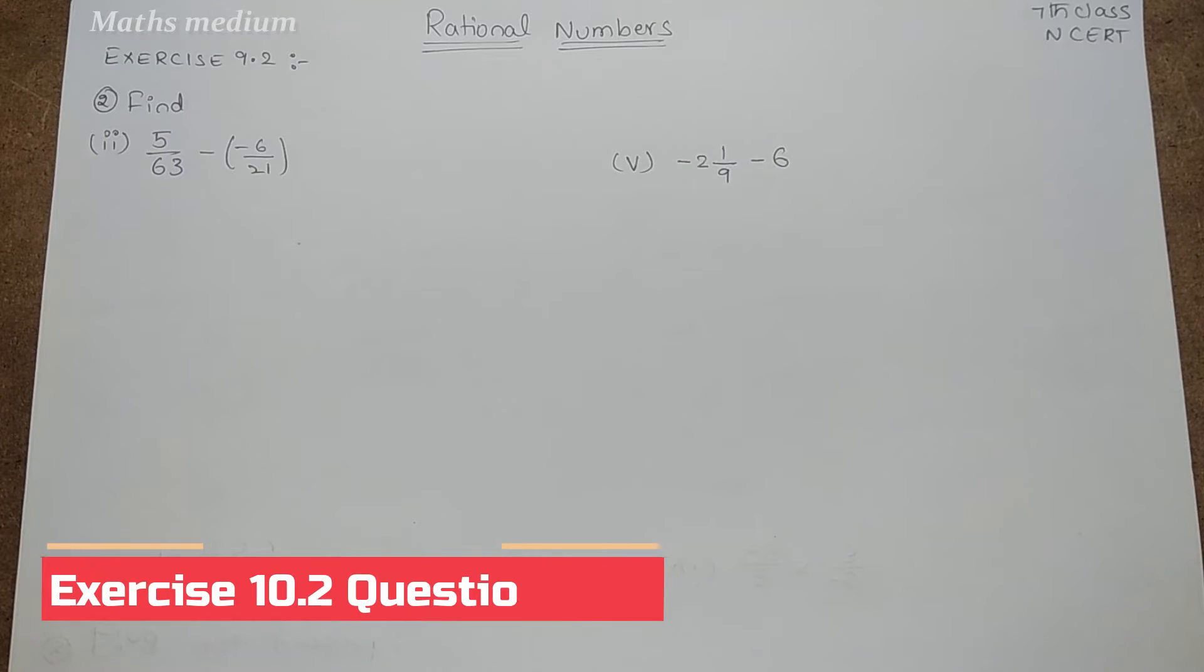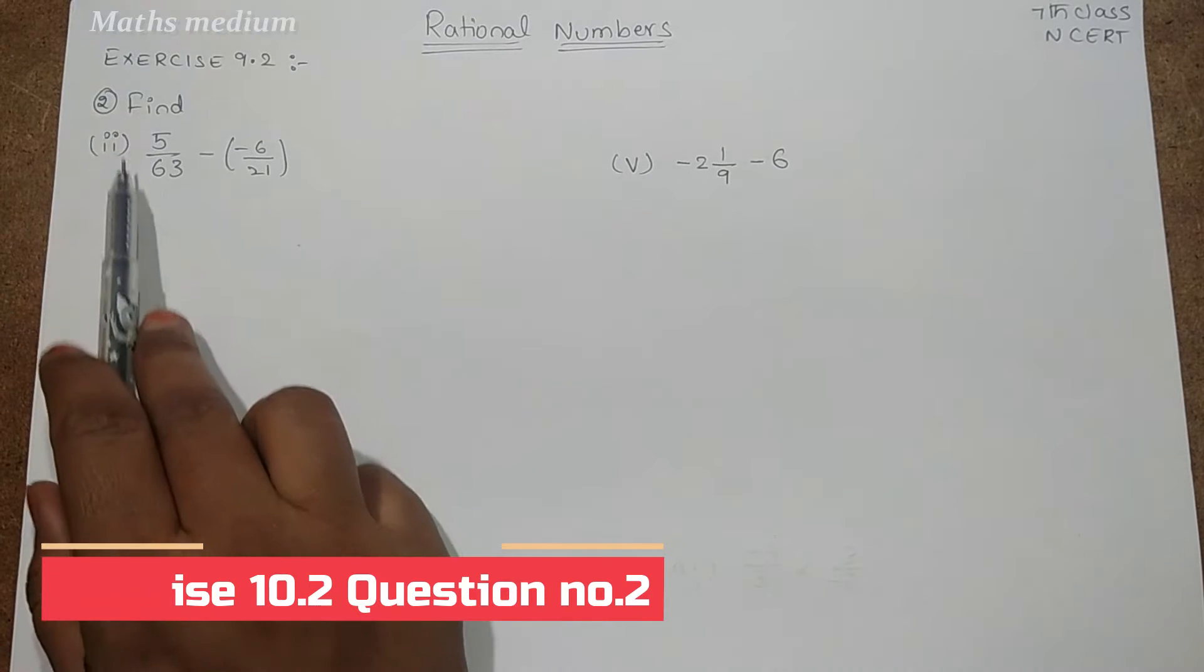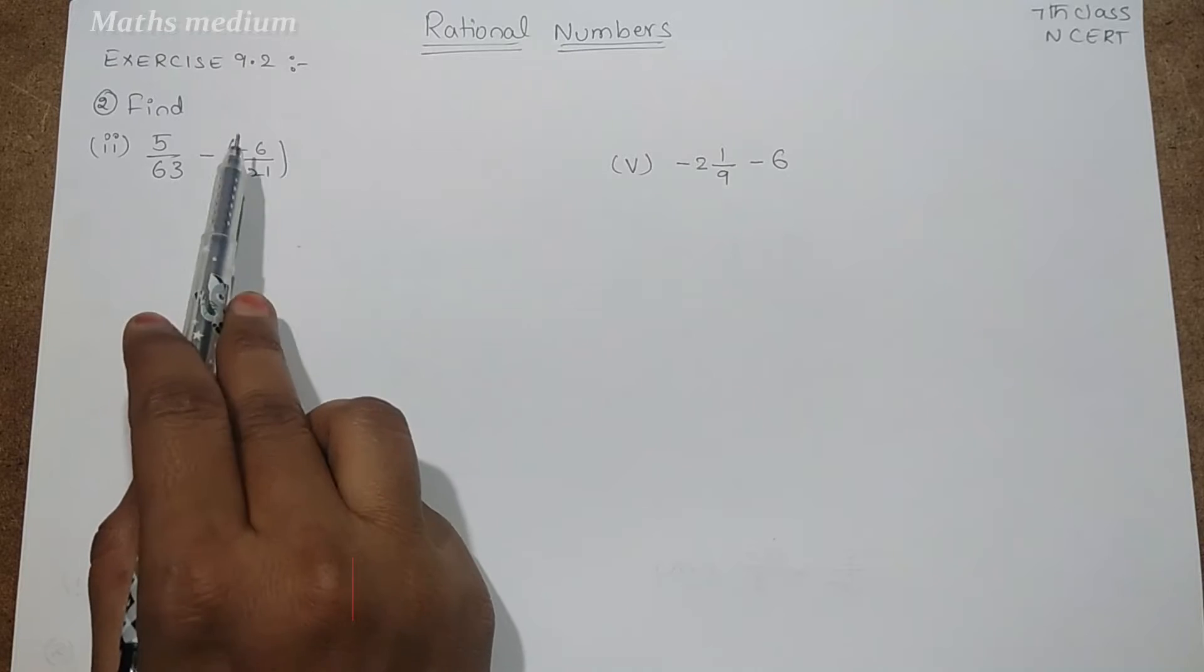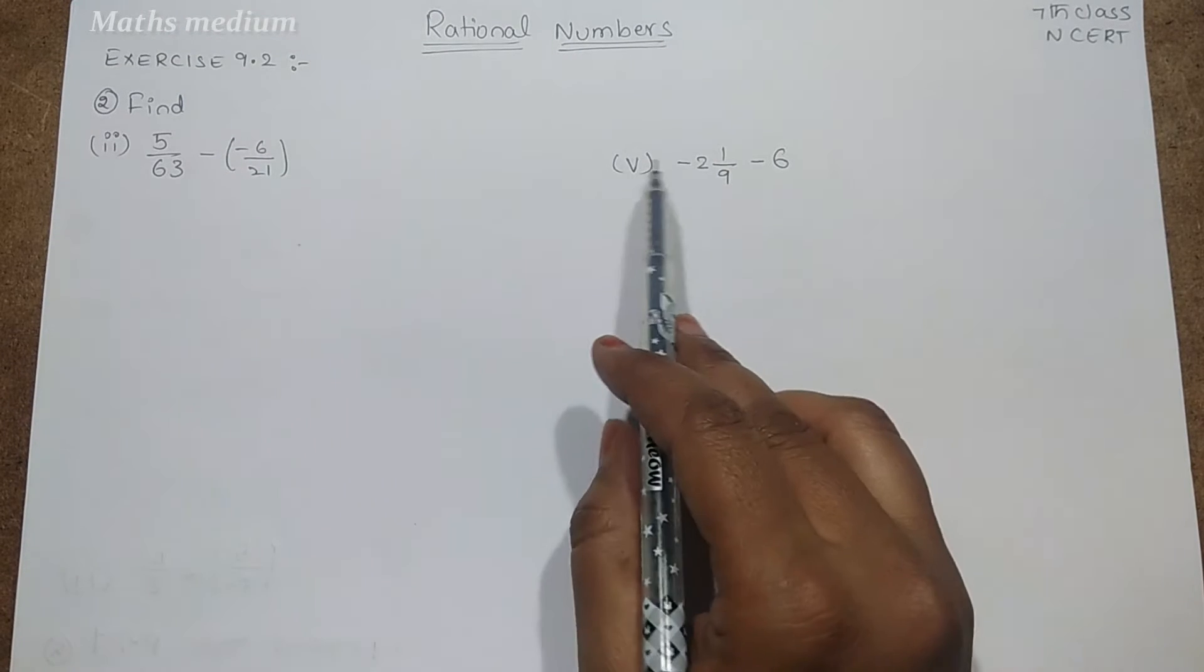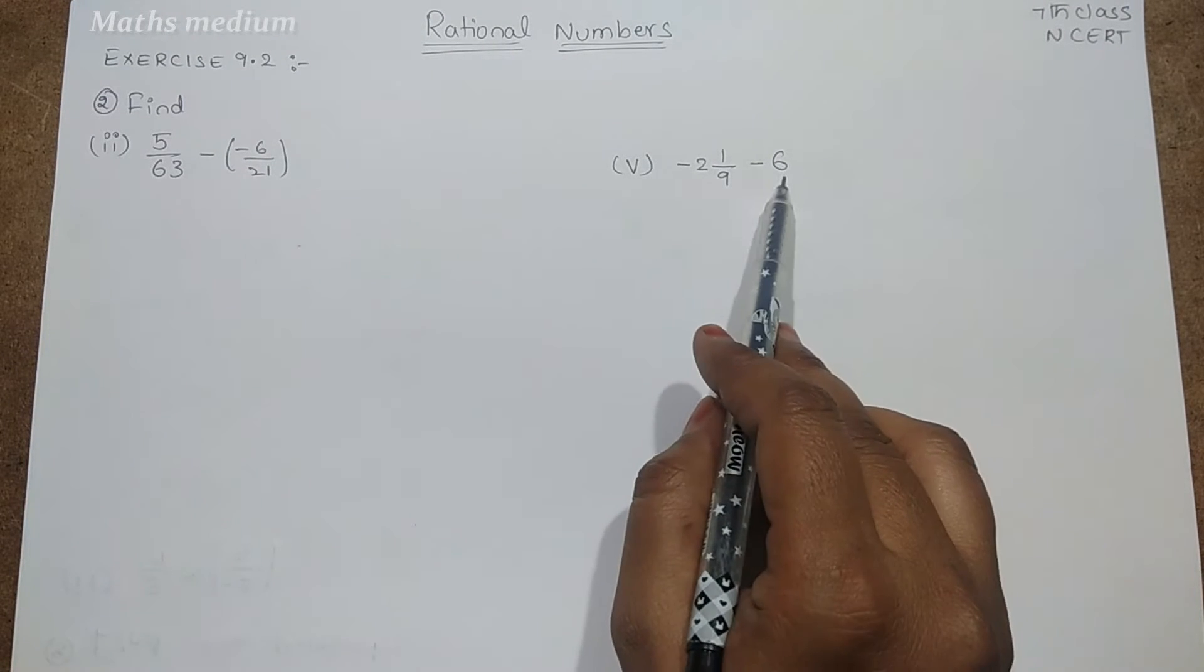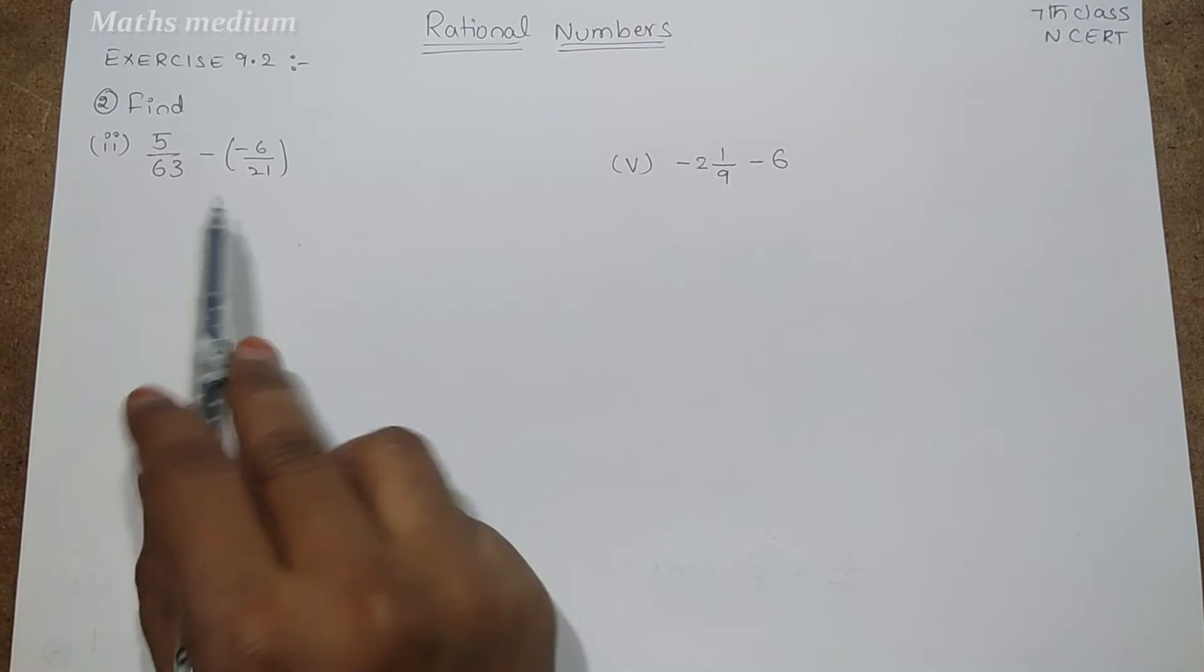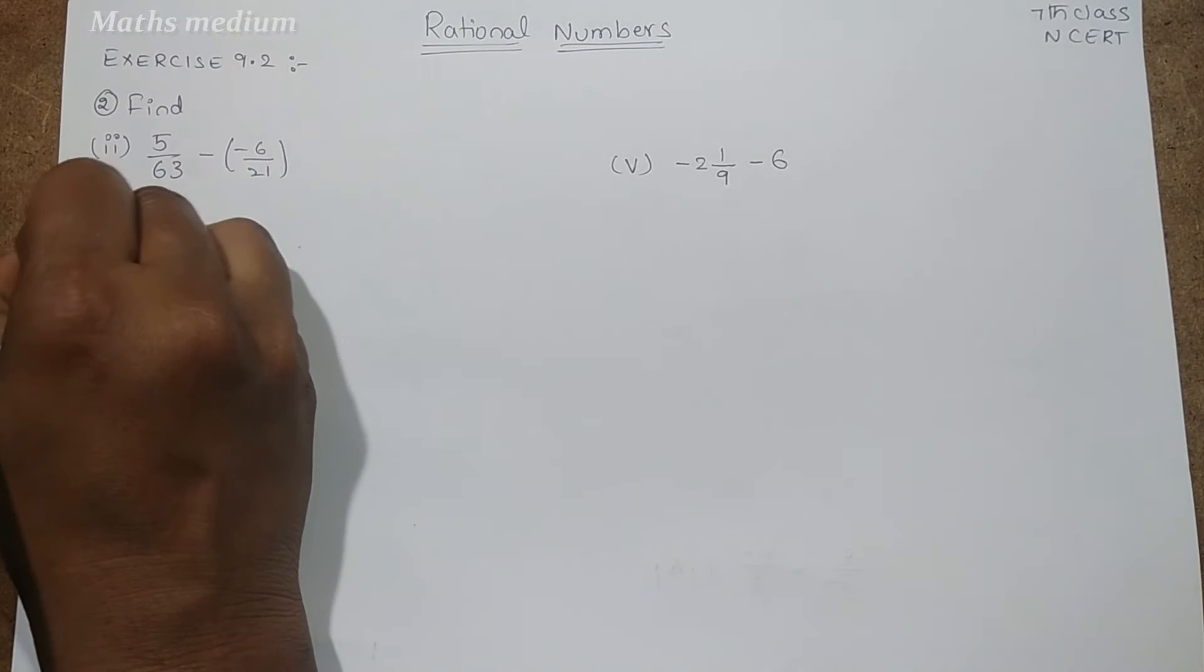Hi, hello, welcome to Maths Medium. Today I came with exercise 9.2 from rational numbers, 7th class NCERT, question number 2. Find 5 by 63 minus minus 6 by 21 and minus 2 1 by 9 minus 6. So we have to do rational number subtraction here. Let's start from here.